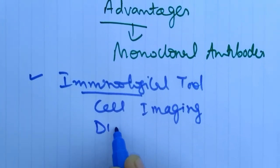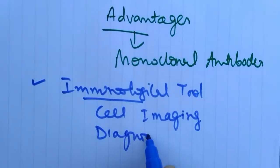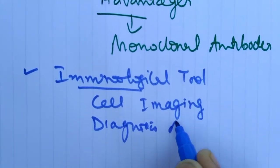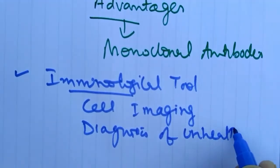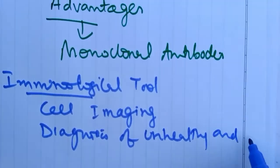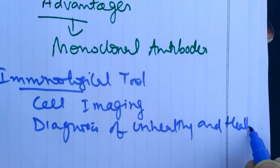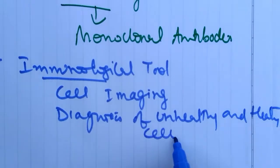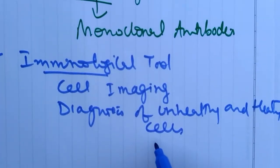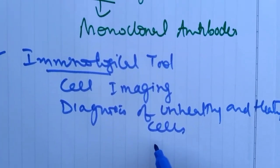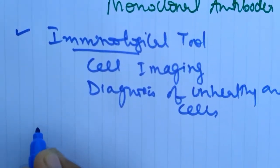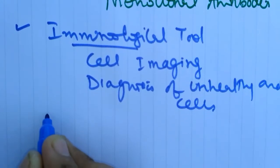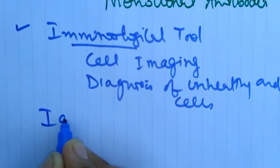Diagnosis of unhealthy and healthy cells, because the unhealthy cells and healthy cells have different production rates of immunoglobulins.